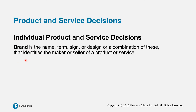After deciding on the product itself, you decide on the brand. A brand includes the name, term, sign, or design — or a combination — that identifies the maker or seller of a product or service. For example, Apple produces their smartphone and calls it iPhone. iPhone is the brand name, with the sign of an apple — the fruit shape that has been bitten — as its symbol.